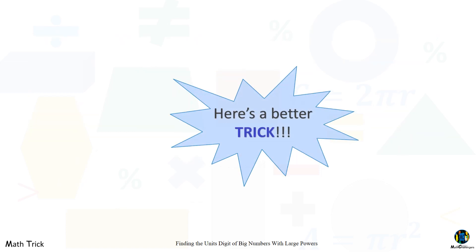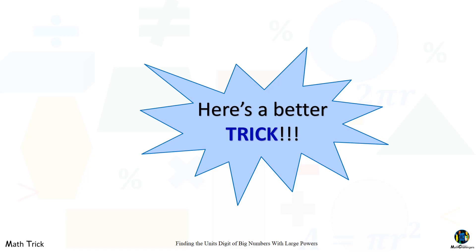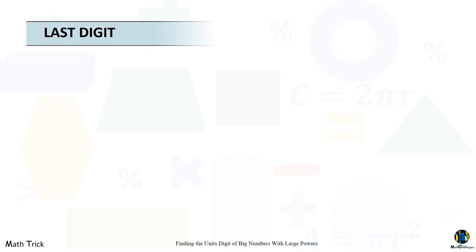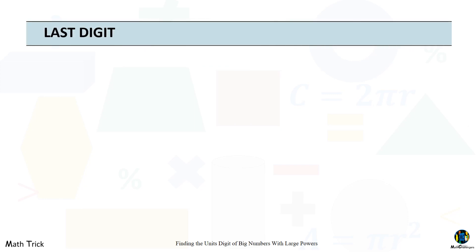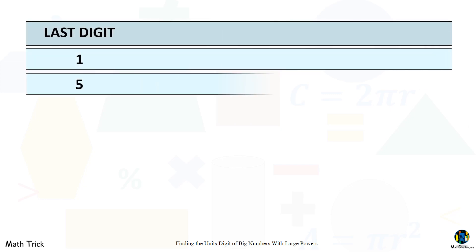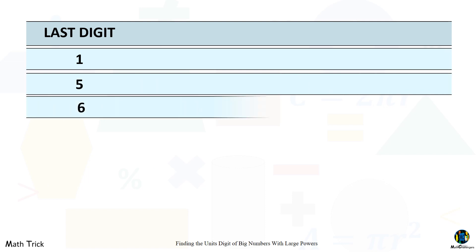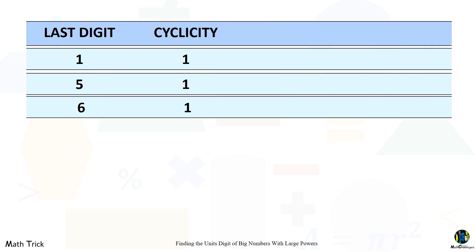Here's a better trick. To find the unit's digit of a number regardless of how big it is, just identify the last digit, then determine its cyclicity. For numbers with one, five, and six as their unit's digits, the cyclicity is one — the unit's digit is always one, five, and six respectively.